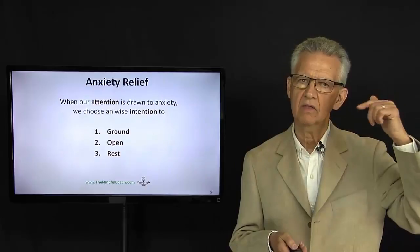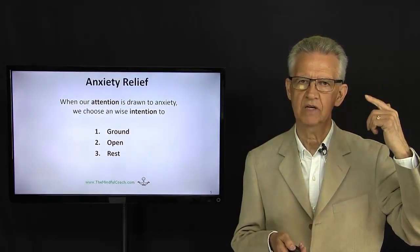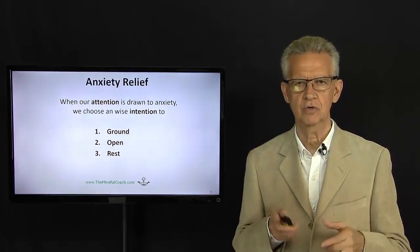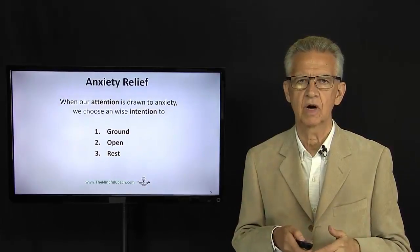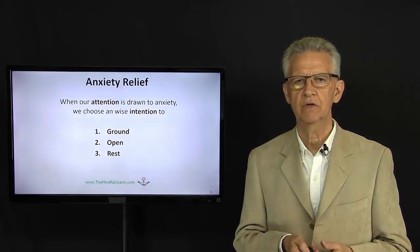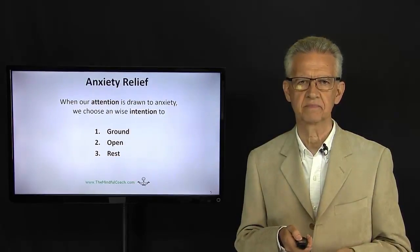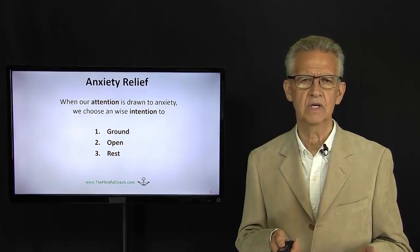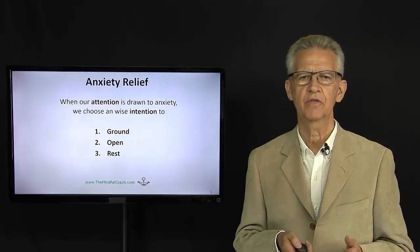So, in order to break that thought loop cycle, what we do is we choose a wise intention. It's coming into our awareness that we are now getting anxious. So, the first thing that we do is we ground. The second thing that we can do is to open, and the third is to rest.